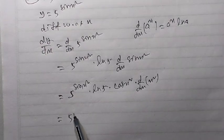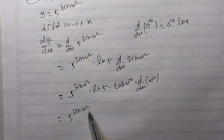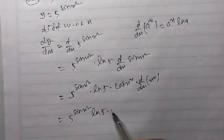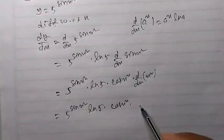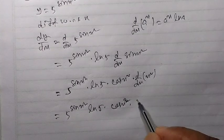Is equal to 5 to the power sin x square ln 5 cos x square, into derivative of x square, that is 2x.